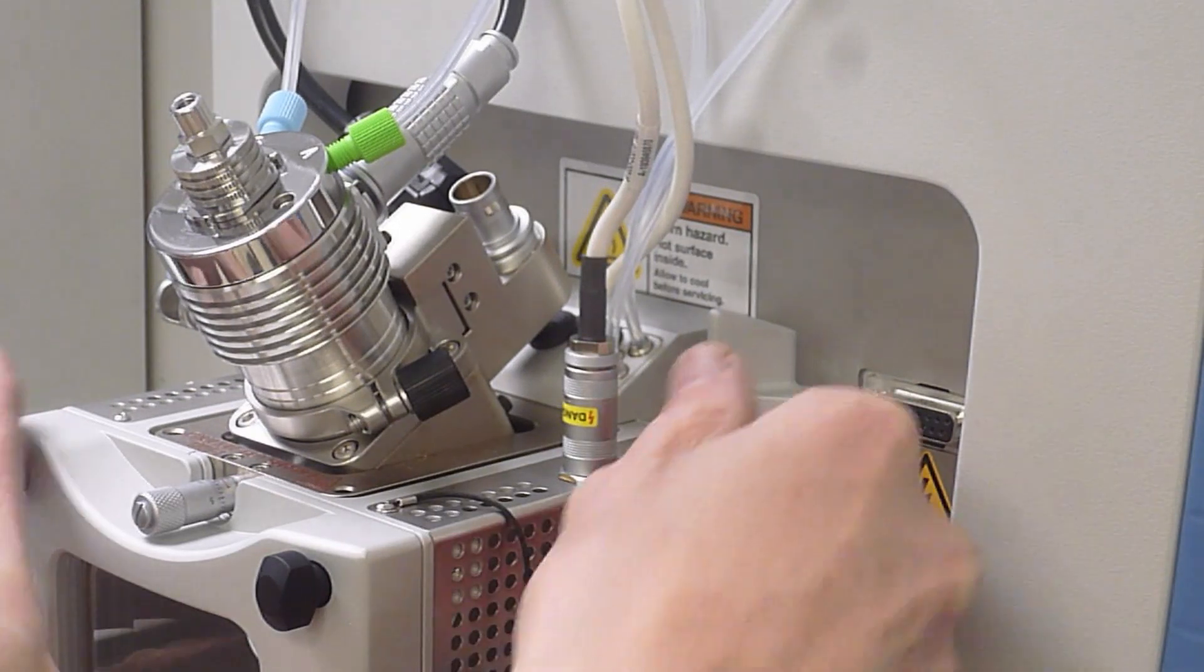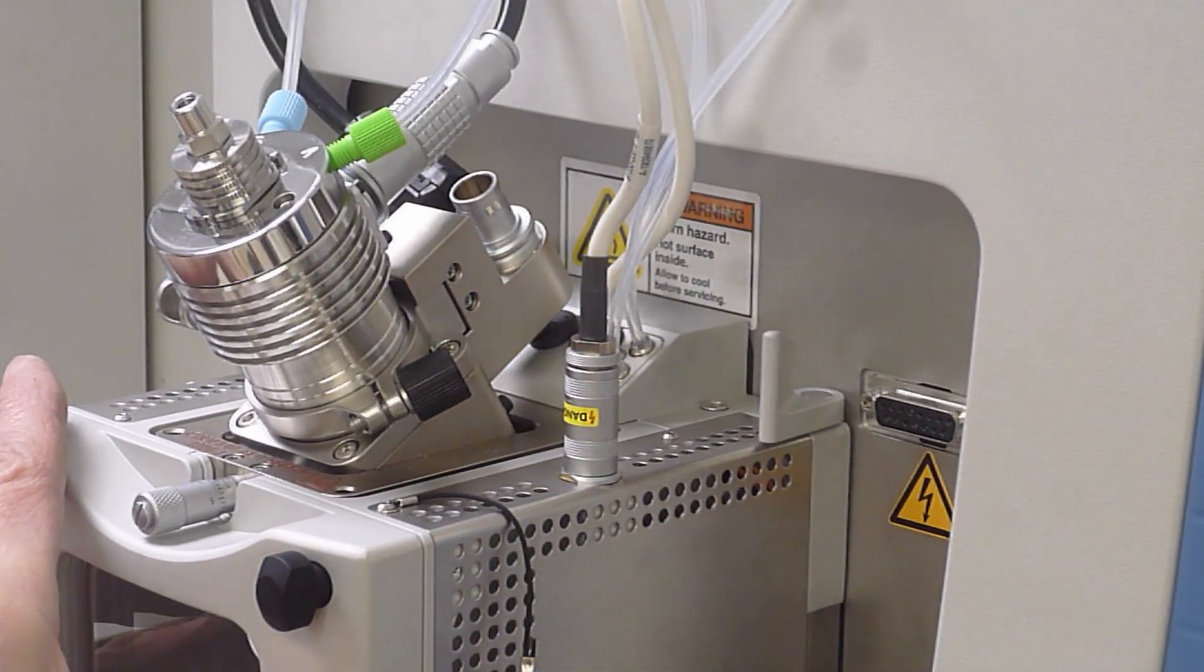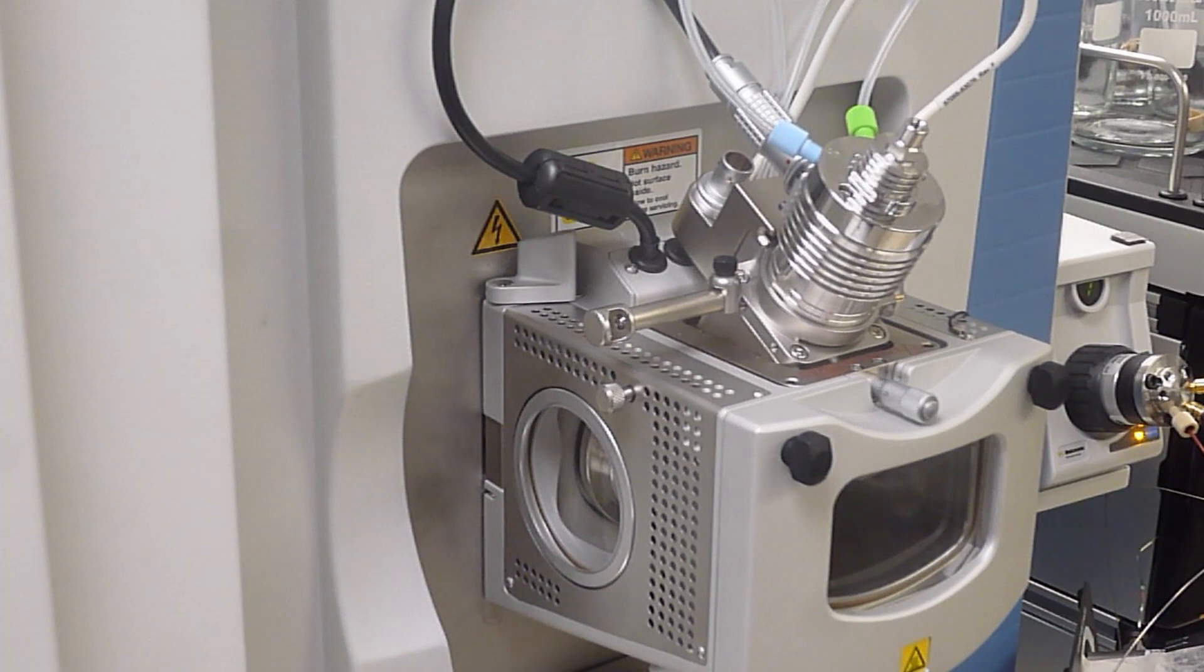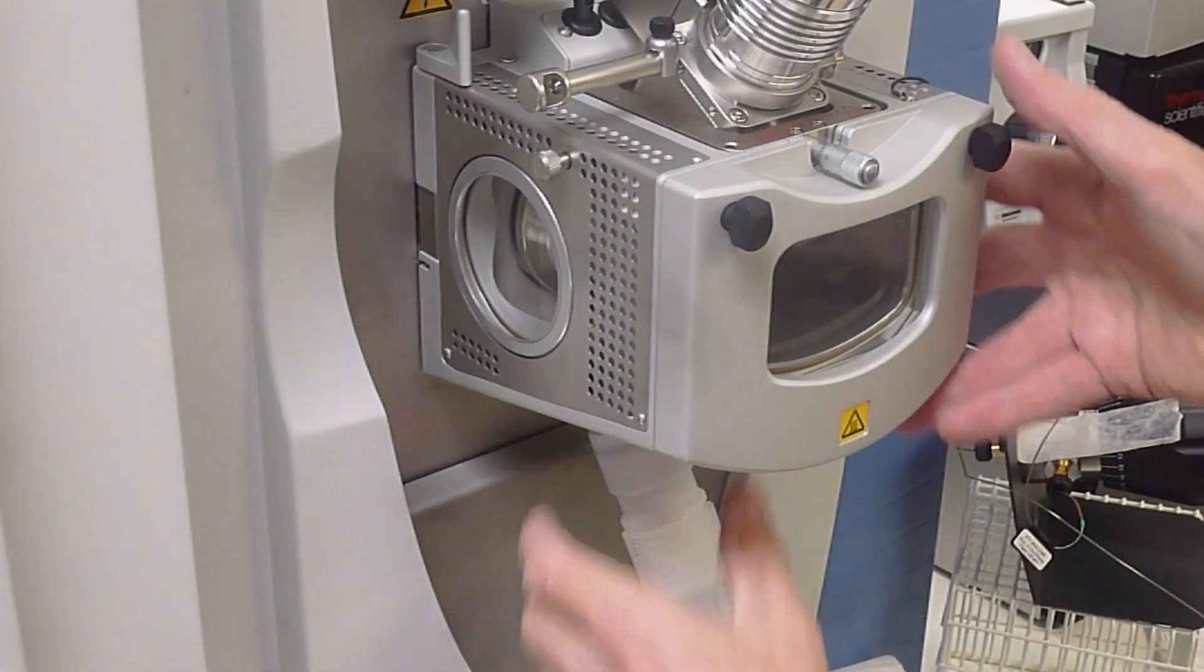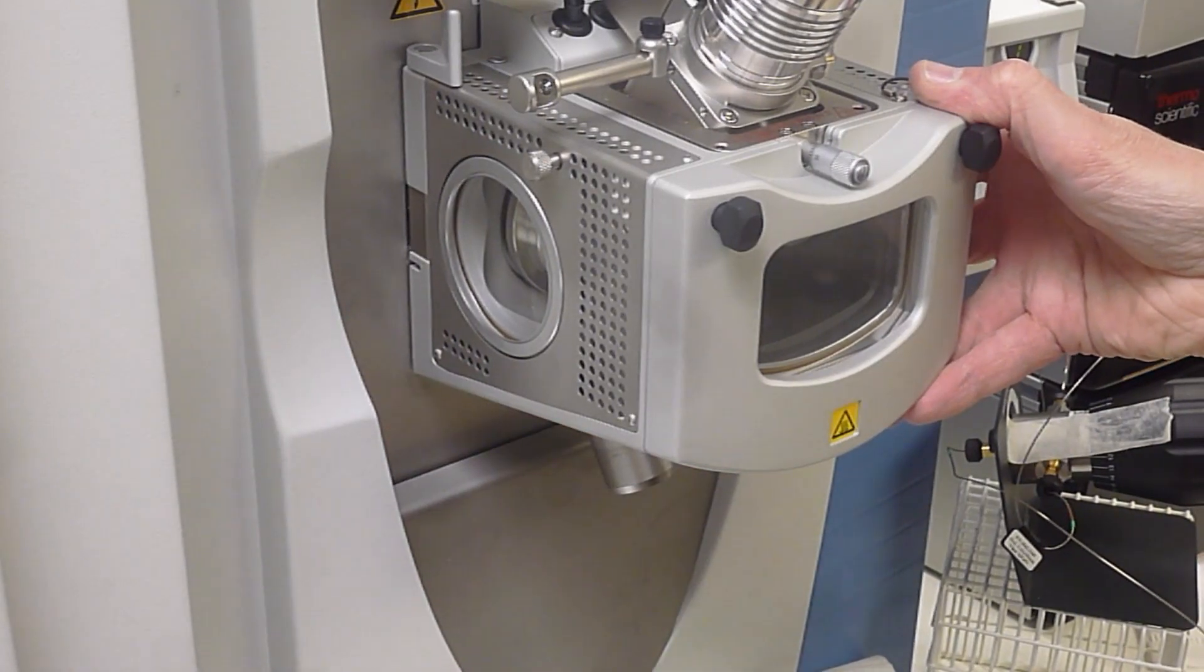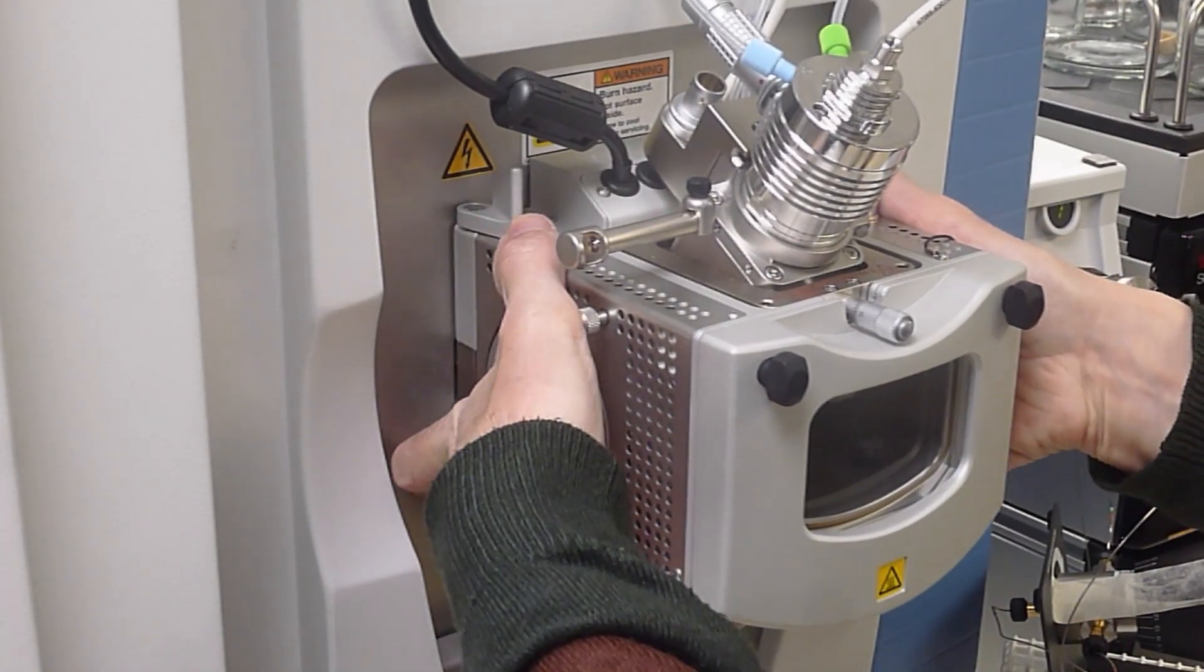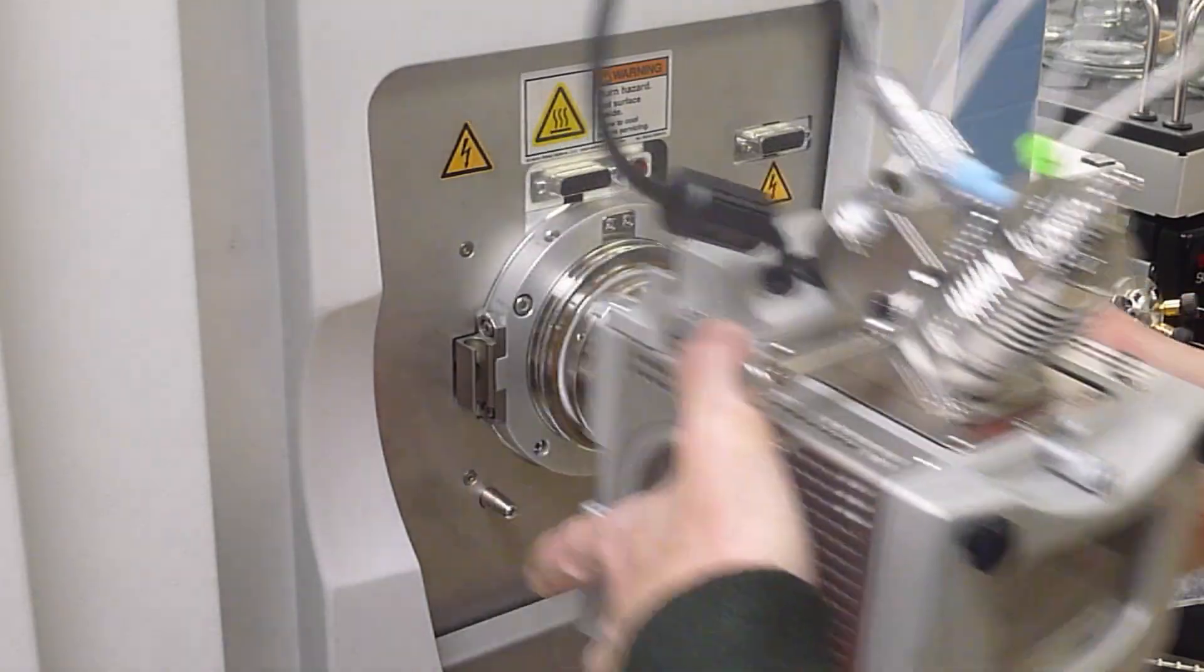Move the right hand tag outwards. Move the left hand tag outwards too and don't forget to pull off the exhaust tube from underneath. Now you can wiggle the entire spray chamber off. Be careful it's quite heavy.